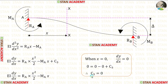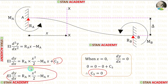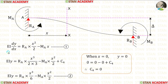We got the value of C3. So, in this equation, for C3, let us apply 0. When we do that, we are getting this. This is the equation for the slope. Let us keep this equation as number 1.